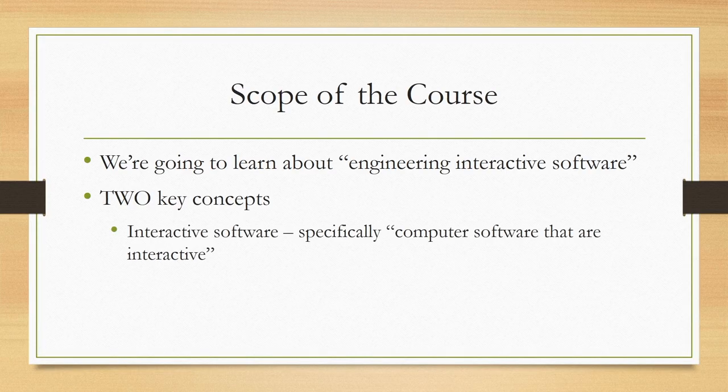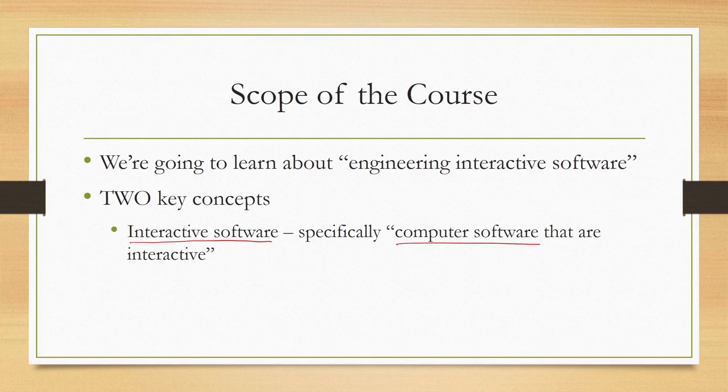Here we are going to talk about Design and Implementation of Interactive Systems. In other words, we will be actually talking about how to engineer, quote unquote, an interactive system. There are two things involved here. One is interactive system or software, specifically computer software that are interactive. We are going to focus here entirely on software that are interactive. What are interactive software? We will soon learn about those.